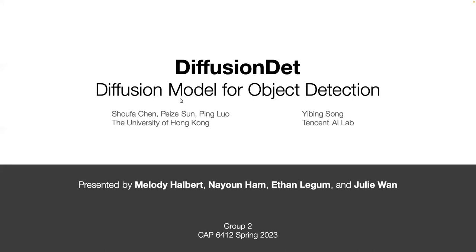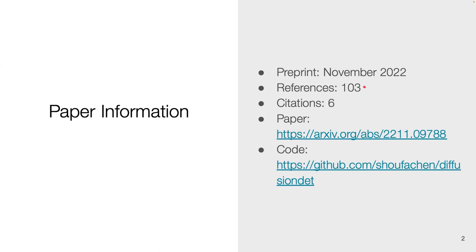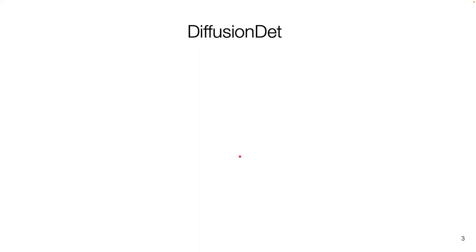This paper is the first time and first research done for diffusion on object detection, so it's pretty neat. It's a preprint from November of 2022 with 103 references and six citations. Here's the paper if you'd like to access it, as well as the code that was made available last November as well.